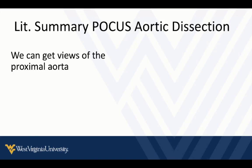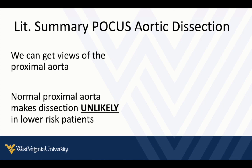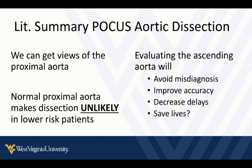There is a fair amount of literature on point-of-care users and aortic dissection. The quick summary is we can get views of the proximal aorta at the bedside. If the proximal aorta is normal and the patient is otherwise low-risk, it's unlikely they have a type A dissection. It has been well documented that checking the ascending aorta in patients with chest pain avoids misdiagnosis, improves accuracy, and decreases delays to diagnosis and intervention. There are decent trends suggesting lives are saved when we use bedside ultrasound to diagnose aortic dissection early.